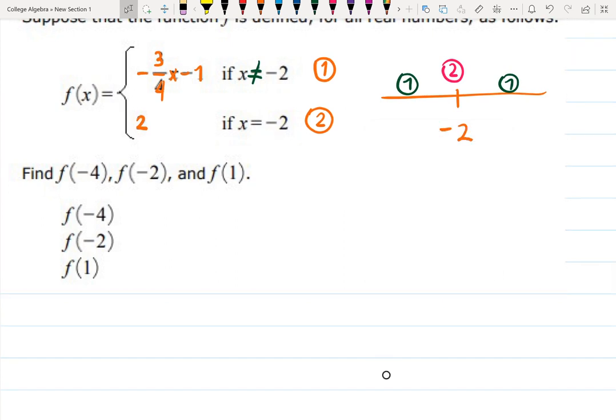Now let's find these values. How to find f(-4)? Which case should I choose? -4 happens somewhere over here—this is case number 1. -4 is not -2, so I'll be choosing this first equation to plug -4 in. It's going to be -3/4, and I'll indicate I'm choosing equation number 1 and plugging -4 into x: -3/4 times -4 - 1. The answer is 2. -4 times -3/4 gives me 3, and 3 - 1 is 2.